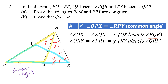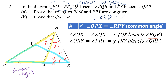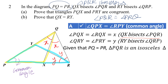Next, we make use of the given condition that PQ is equal to PR. If PQ equals PR, that makes triangle PQR an isosceles triangle. If it's isosceles, then angle PQR equals angle PRQ. So angle PQR, which is 2X, equals angle PRQ, which is 2Y. Dividing both sides by 2, we get X equals Y.